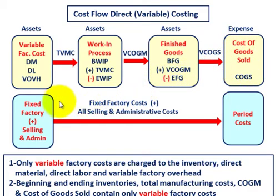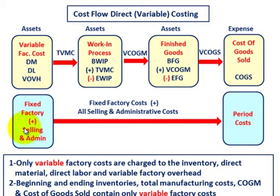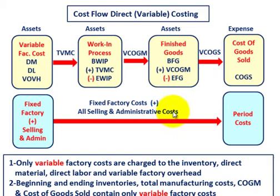With direct or variable costing, we also look at our fixed costs. We take our fixed factory costs plus any selling and administrative expenses, total them together, and those flow into an expense account — they are period costs that get expensed when incurred.